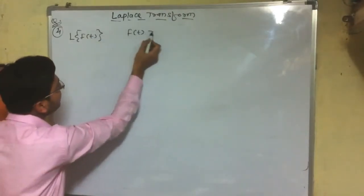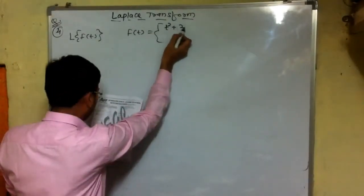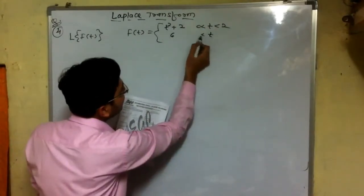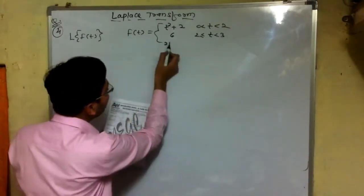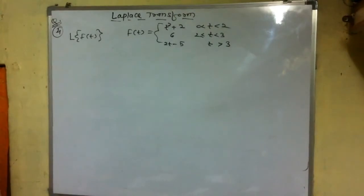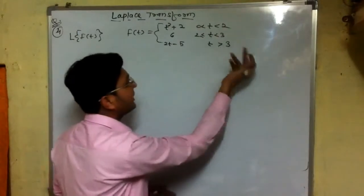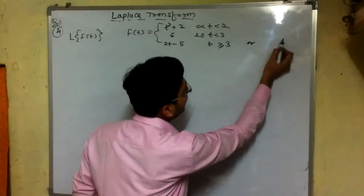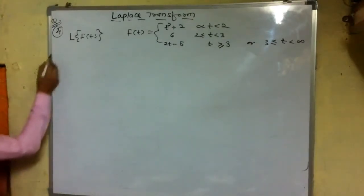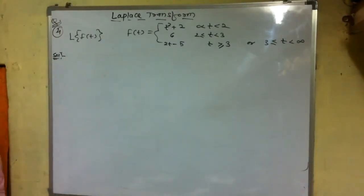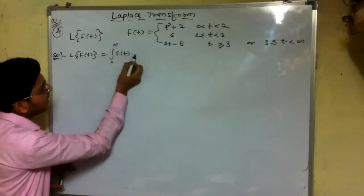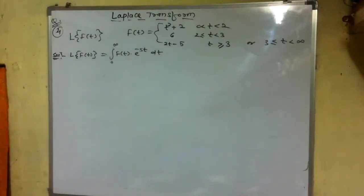Now consider the next problem. The function f(t) is given as: t² + 2 for t in [0, 2]; 6 for t in [2, 3]; and 2t − 5 for t ≥ 3. We want the Laplace transform of this piecewise function. Using the definition of Laplace transform, we integrate f(t) times e to the power minus st from 0 to infinity.